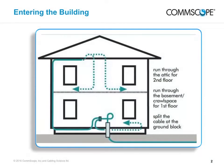How and where you enter the residence depends on the types of service that are going to be provided. If there is no Network Interface Unit or NIU, you need to proceed from the ground block to the various locations around the residence, splitting the connections as you go. It may be to your advantage to use a ground block with a splitter so that two coaxial cables may be run in different directions.